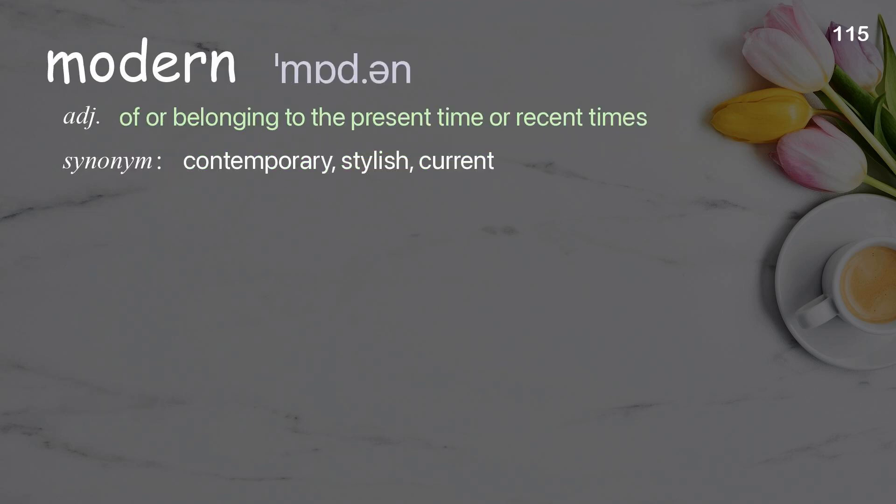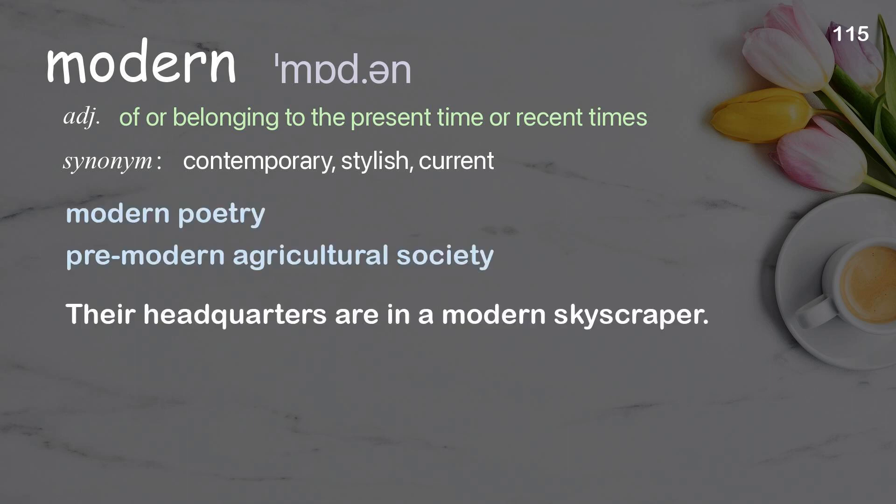Modern: of or belonging to the present time or recent times. Examples: modern poetry, pre-modern agricultural society. Their headquarters are in a modern skyscraper.